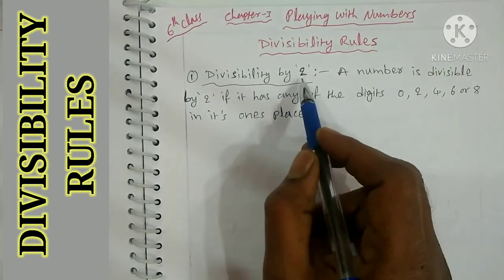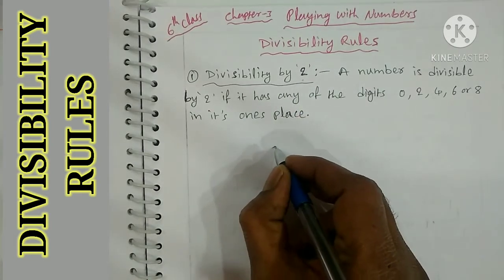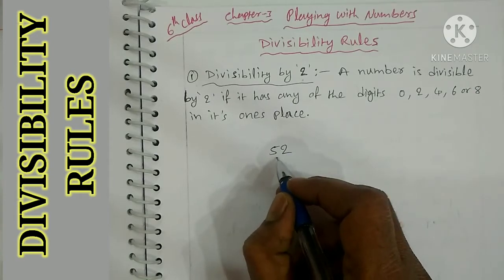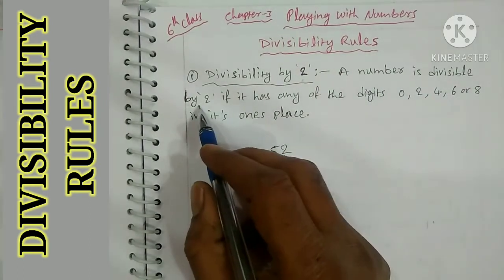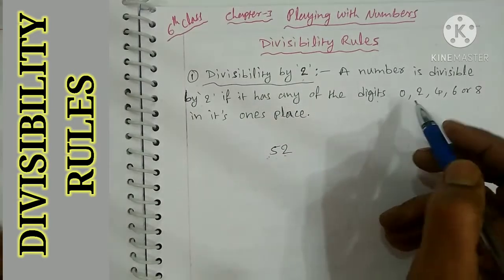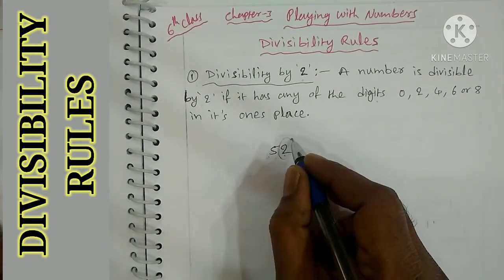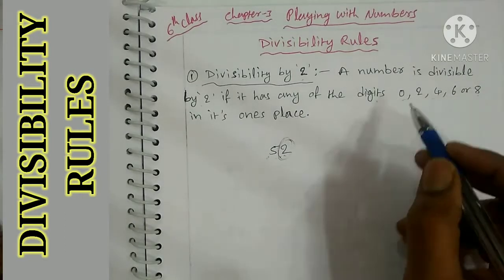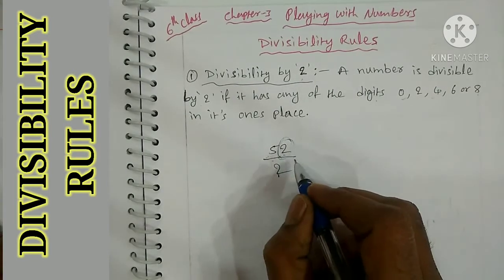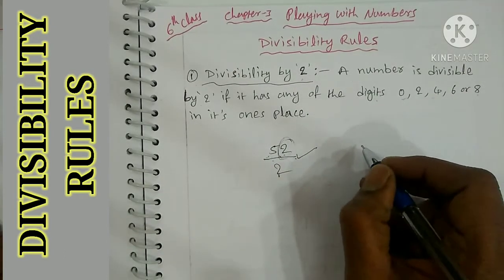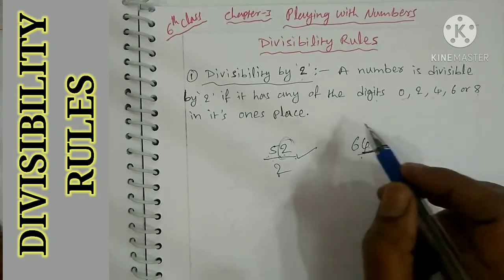The first divisibility rule: a number is divisible by 2. A number is divisible by 2 if it has any digit 0, 2, 4, 6, or 8 in its units place. For example, 52 - the units place is 2, so it is divisible by 2. Another example: 64 - units place is 4, which is divisible by 2.